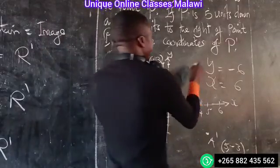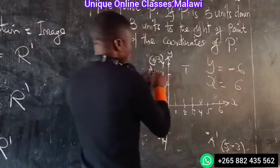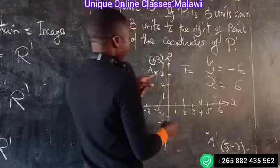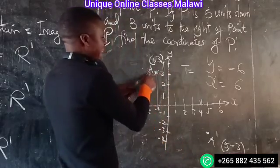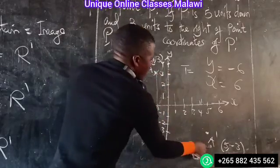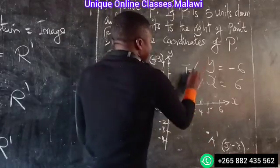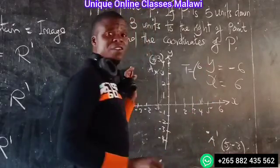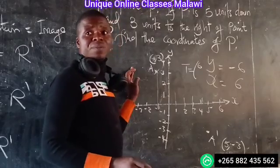So the whole translation of the vector is like A to A-bar. It's like x equals 3, or 3, 6.